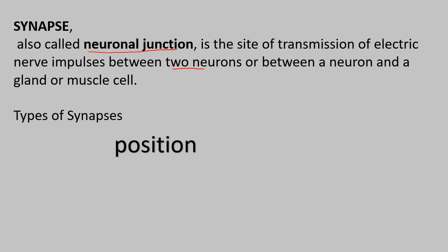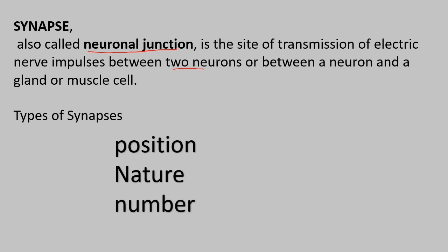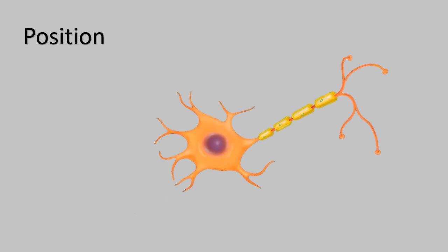How do we classify the synapse? Based on position, we classify it using the same parts. If we look at the axon and axon terminal, we can classify the synapse. The positions include the dendrite, the soma or body, the axon, the axon hillock, and the axon terminal.